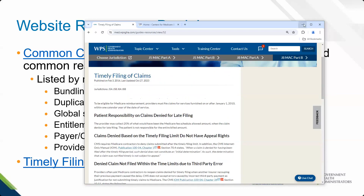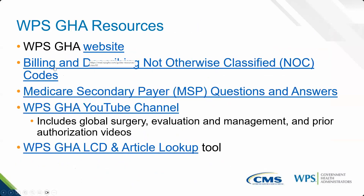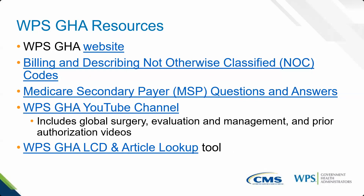Other resources on our website: one reason we discussed today was billing a NOC code — J3490, the NOC code for drug — and here is a resource that tells you what you need to put on the claim. We also talked about denials for employer group health plan or large group health plan — that's Medicare secondary payer. We have great question-and-answer resources for you there as well as our YouTube channel, which includes global surgery and prior authorization videos explaining the prior authorization process, which codes require it, and what you need to place on your claim. I will now show you the LCD and article lookup tool.